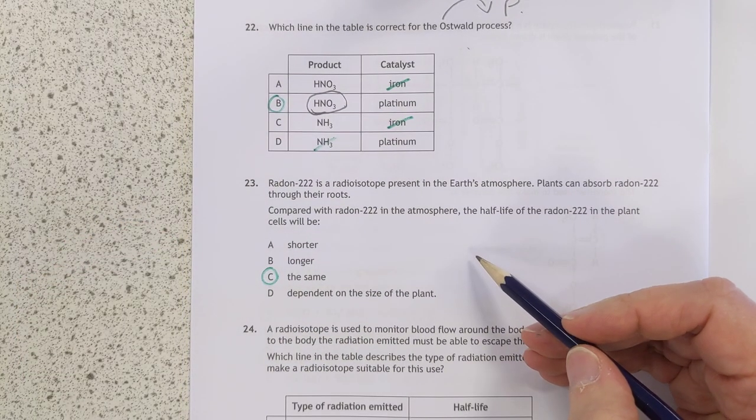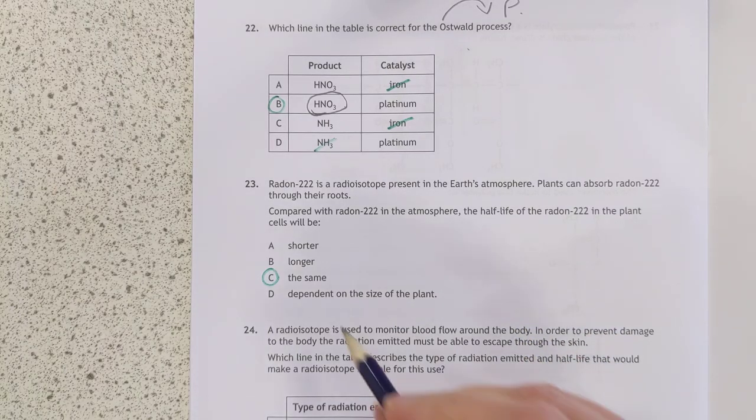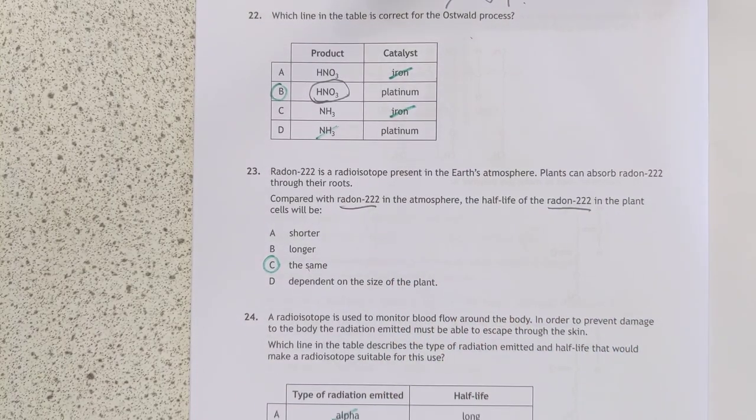Trick question here. Comparing half-lifes. Half-lifes never change. They're always the same. For a given radioisotope anyway. Then it's always the same.